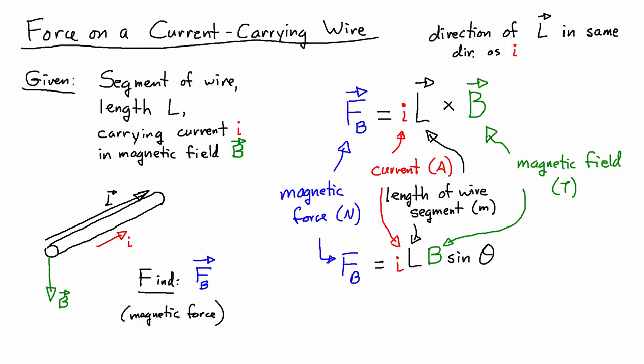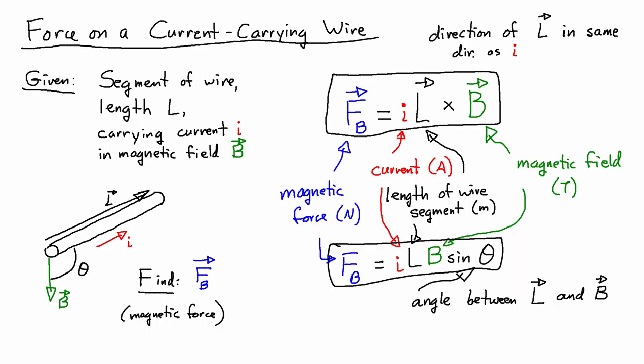So the only new thing, if we're going to use this other, the second equation in terms of magnitudes, is that we have to think about what that angle theta is. And theta is the angle between vectors L and B. And you can use either of these expressions, depending on your preference.